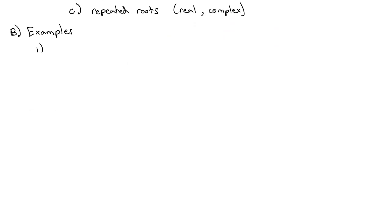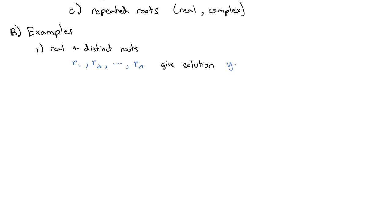First, let's look at the case where we've got real and distinct roots. Those roots are going to be r1, r2, and so on, all the way up to r_n. If we have those roots, they give solutions — as we've seen before with second-order differential equations — where y equals c1 times e to the r1·x, plus c2 times e to the r2·x, and so on up to c_n times e to the r_n·x.